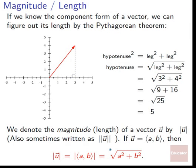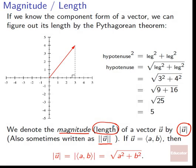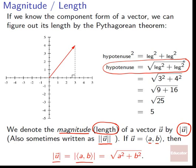When we want to denote the magnitude of a vector — the length — we use vertical bars on either side, just like with absolute value. Sometimes you'll also see double bars on either side. In either case, we're talking about how long the vector is, measured from the origin out to its tip. So if U equals ⟨a, b⟩, then the magnitude of U equals the square root of a squared plus b squared.